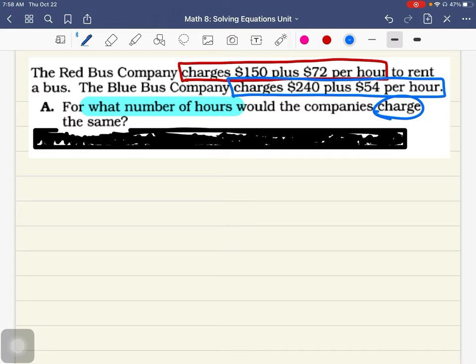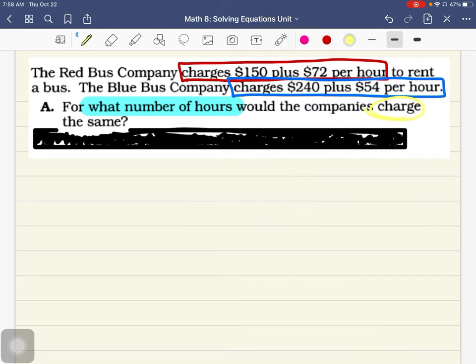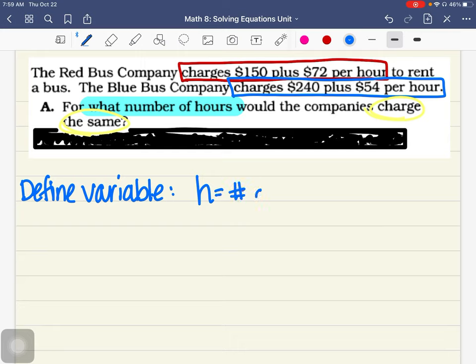Same is always a good number to look for. Companies charge the same. That's what we're looking for. So we've annotated. We're going to define our variable. And in this case, we're going to, what number of hours. So I'm going to say H is going to be number of hours.